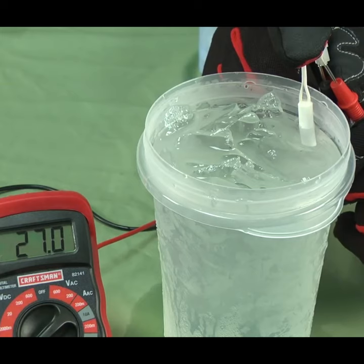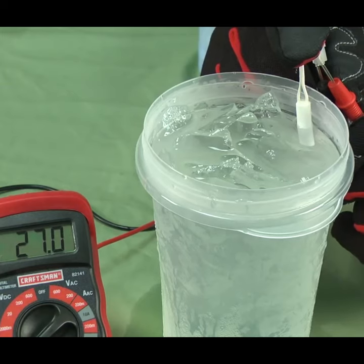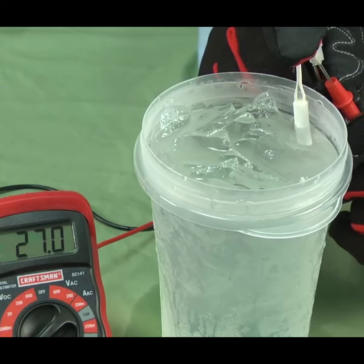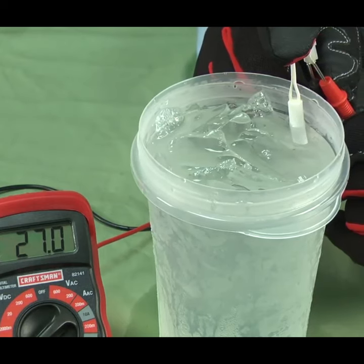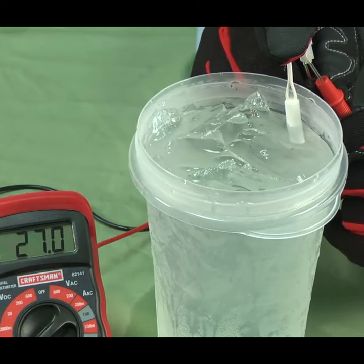Place the thermistor in a cup of ice water and you should measure around 27,000 ohms of resistance because the water temperature is around 32 degrees. Replace the thermistor if the resistance readings are off by more than 10 percent.